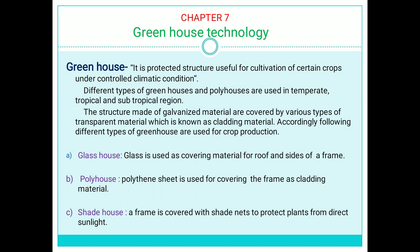Before starting the Greenhouse Technology chapter, let us understand what a greenhouse means. A greenhouse is a protected structure useful for the cultivation of certain crops under controlled climatic conditions. This structure can control climate factors such as air, temperature, humidity, moisture, wind velocity, and more.